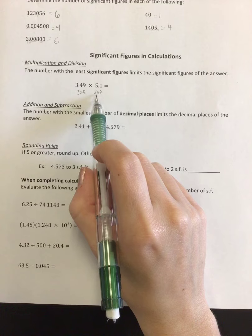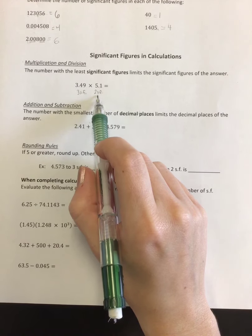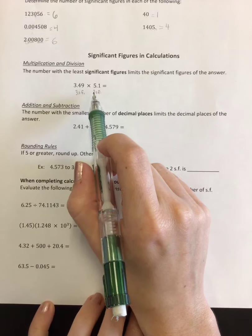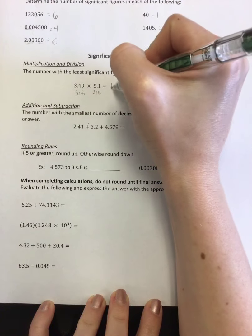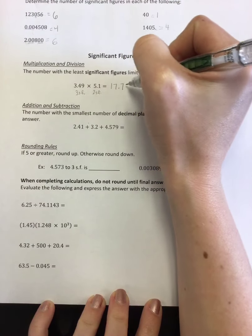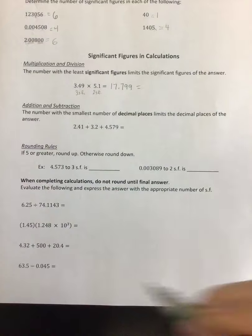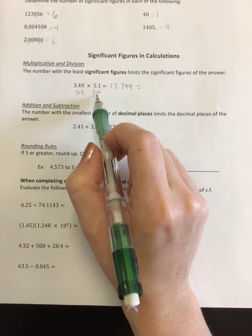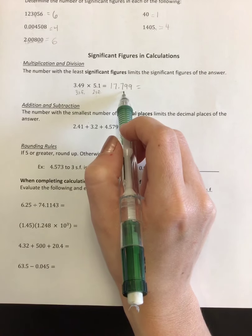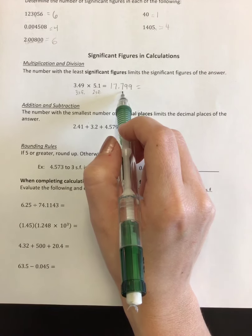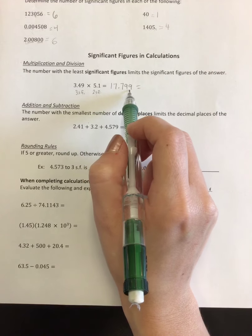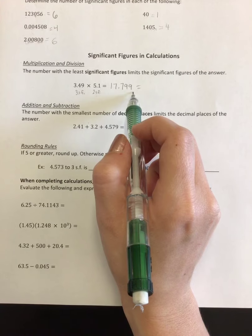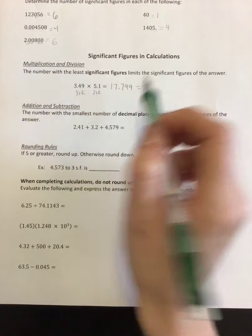The rule is that the number with the least number of sig figs will determine the sig figs of the answer. So if you were to just put 3.49 times 5.1 into your calculator, you'd get something along the lines of 17.799 and such. But you know that since this number only had 2 sig figs in it, this number, your final answer, can also only have 2 sig figs in it. So I shouldn't have gone out to all of these decimal places. I need to end my answer with 2 sig figs.